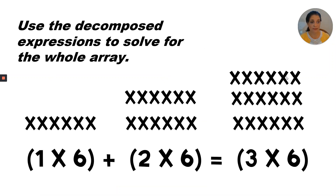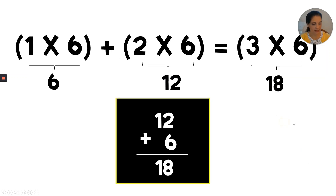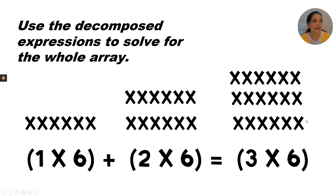Let's go back. We're going to count every single x just to make sure: 1, 2, 3, 4, 5, 6, 7, 8, 9, 10, 11, 12, 13, 14, 15, 16, 17, 18. So that's correct.